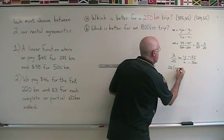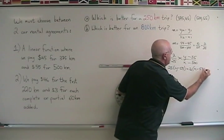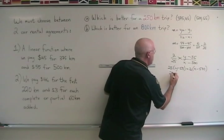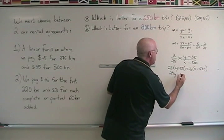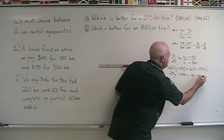And we cross multiply. 25 times y minus 55 is equal to 2 times x minus 500. We have 25y minus 1375 equals 2x minus 1000.